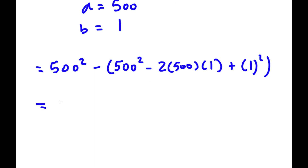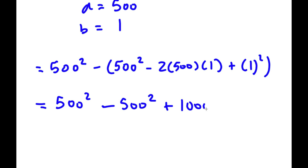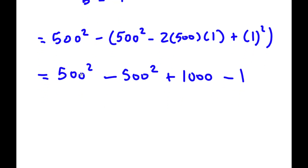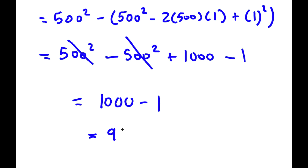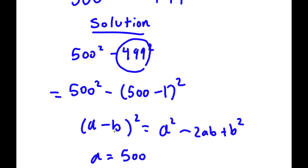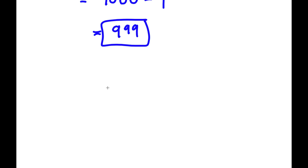So now I have 500 squared minus (500 squared minus 2 times 500 times 1 plus 1 squared). Simplifying: 500 squared minus 500 squared plus 1000 minus 1. The 500 squared terms cancel out, so I have 1000 minus 1, which equals 999.